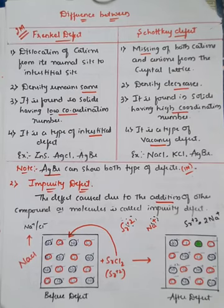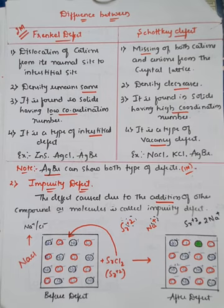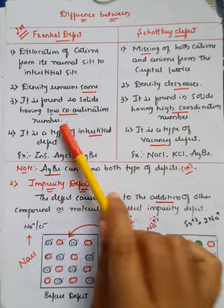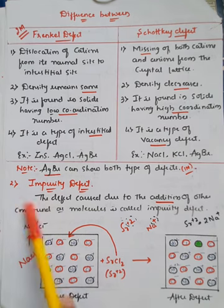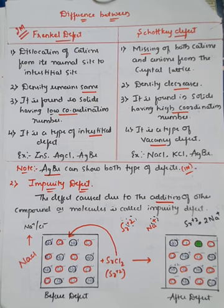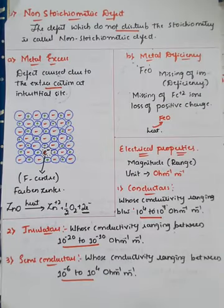In the last class we explained the different kinds of defects: non-stoichiometric defect, stoichiometric defect, and impurity defect. In stoichiometric defect we saw four different types, and one important two-mark question — the difference between Frenkel defect and Schottky defect. We also saw the impurity defect caused due to addition of compounds or molecules, with the example of addition of SrCl2 to NaCl.